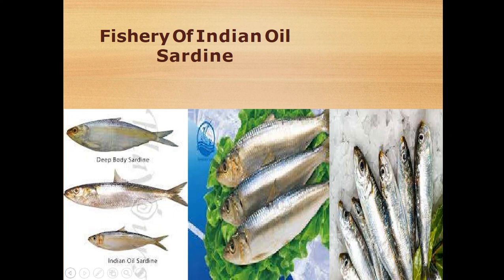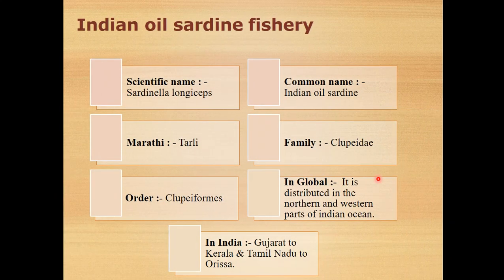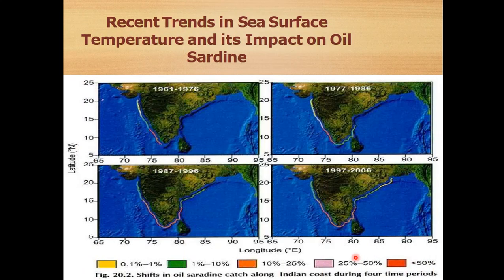About the Indian oil sardine: its scientific name is Sardinella longiceps. Its common name is Indian oil sardine. In Marathi it is called Turley. Family: Clupeidae. Order: Clupeiformes. Globally, it is distributed in the north and western parts of the Indian Ocean. In India, it is mostly found in Gujarat, Kerala, Tamil Nadu, and Orissa. It is a marine water fish.